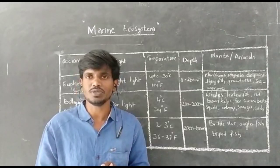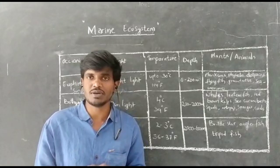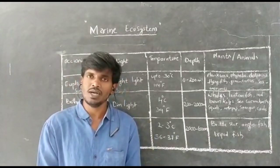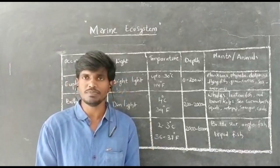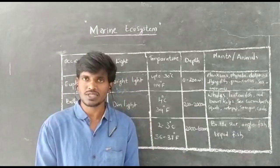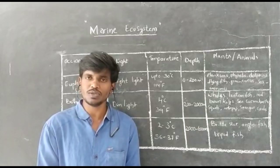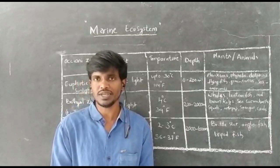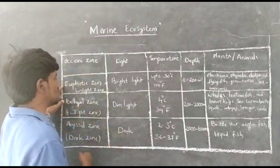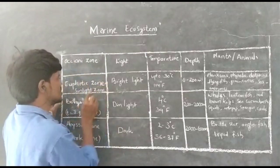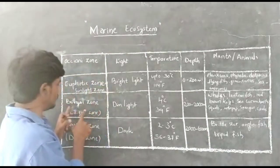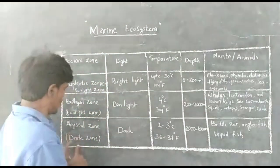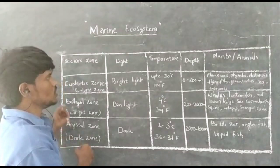Today we will discuss about the zones present in the marine system based on the availability of light. Based on the availability of light in the depths of the sea water or ocean water, the sea water is divided into three main zones: the euphotic zone or sunlight zone, the bathyal zone or dim light or twilight zone, and the abyssal zone which is also known as the dark zone.